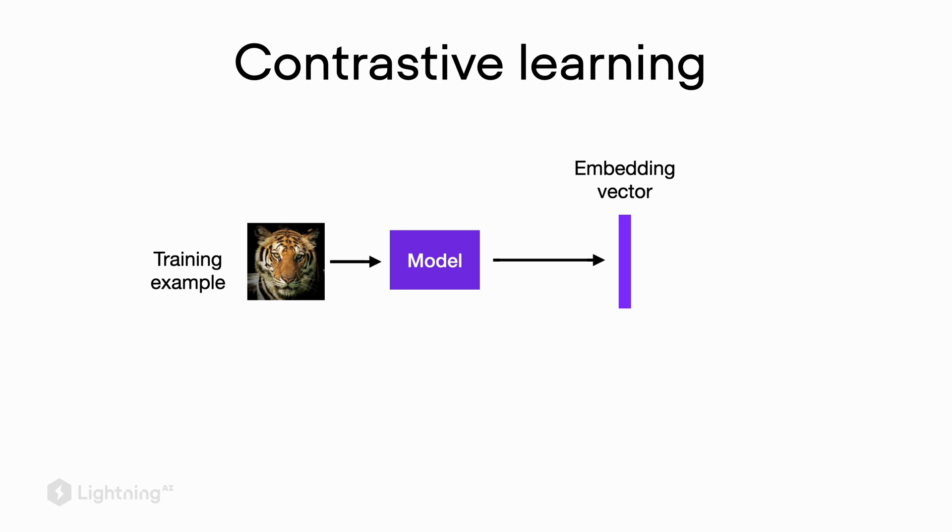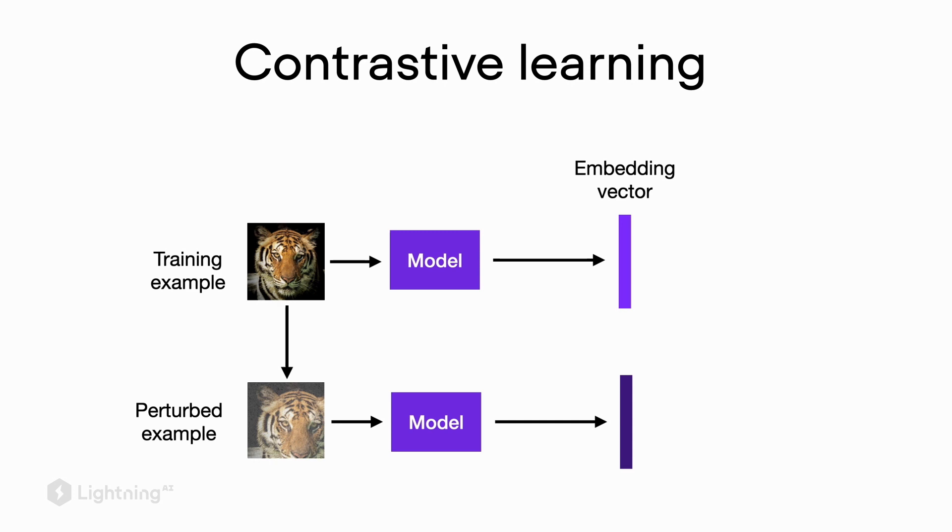Now if I take a perturbed version of this input image where I change, for example, the brightness slightly and crop the image slightly, it will produce a different embedding vector. Note here that we are talking about the exactly same model. The weights between those two paths are the same. We are just applying the model to two different types of input image.